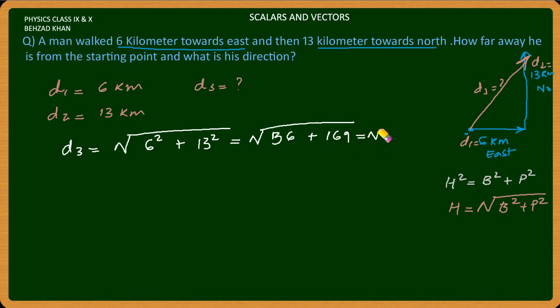This will be the square root of 205, which equals 14.3 kilometers. So the resultant distance is 14.3 km.